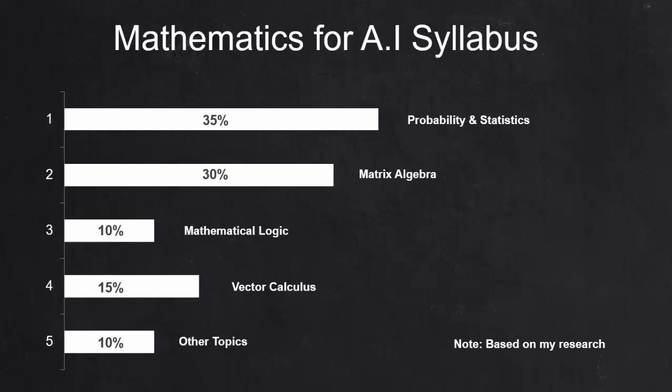It is always best to know the use of each subject so that it will be more interesting to learn. Since probability and statistics and matrix algebra play a major role in artificial intelligence, we will see both areas in depth.